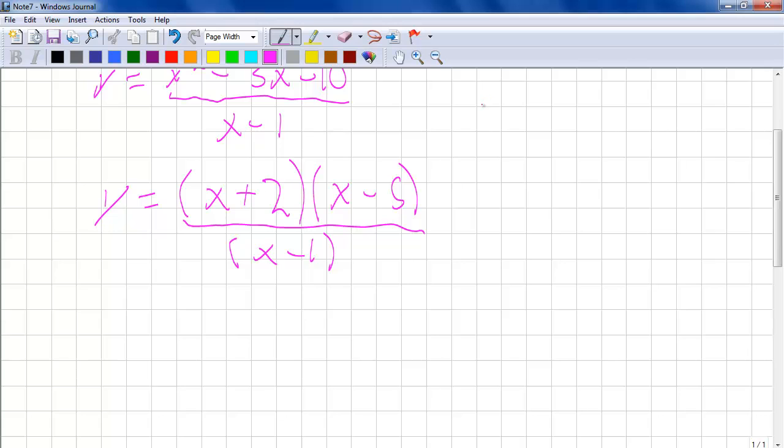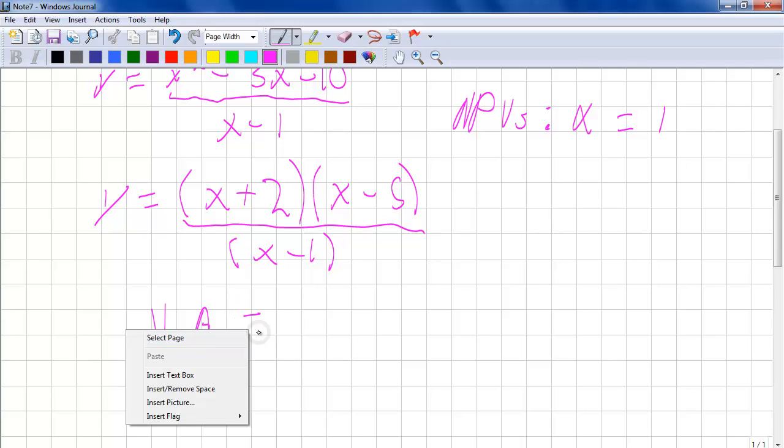In this function, our non-permissible values are x is equal to 1. At x equal to 1 is also our vertical asymptote, meaning that the graph can never touch x equals 1 but will come close to it. So, because our non-permissible value is x equals 1, our vertical asymptote is also equal to 1.